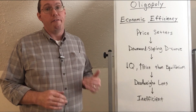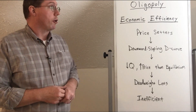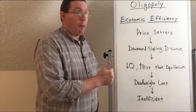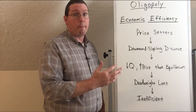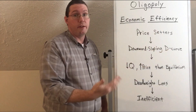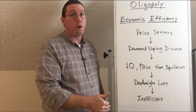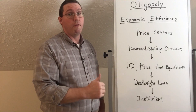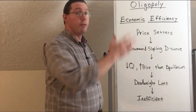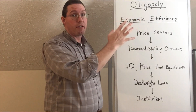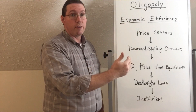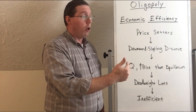Let's talk about the economic efficiency of an oligopoly market. Remember, oligopoly in terms of market power is a price setter. Price setters face a downward sloping demand curve. We have seen this before in monopoly and in monopolistic competition. Because oligopoly behaves very similarly to either monopoly or monopolistic competition, we're going to see the same efficiency problems all over again.